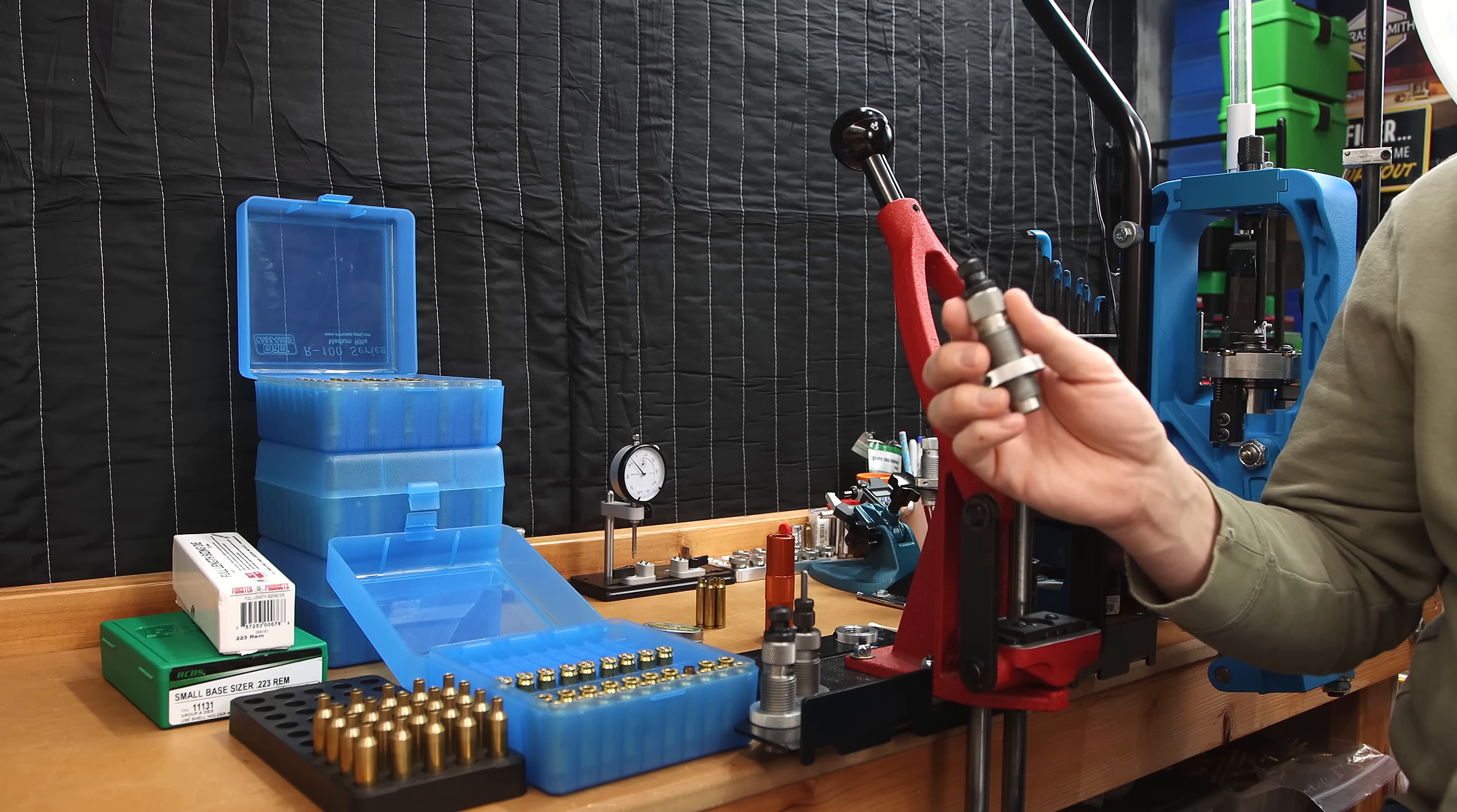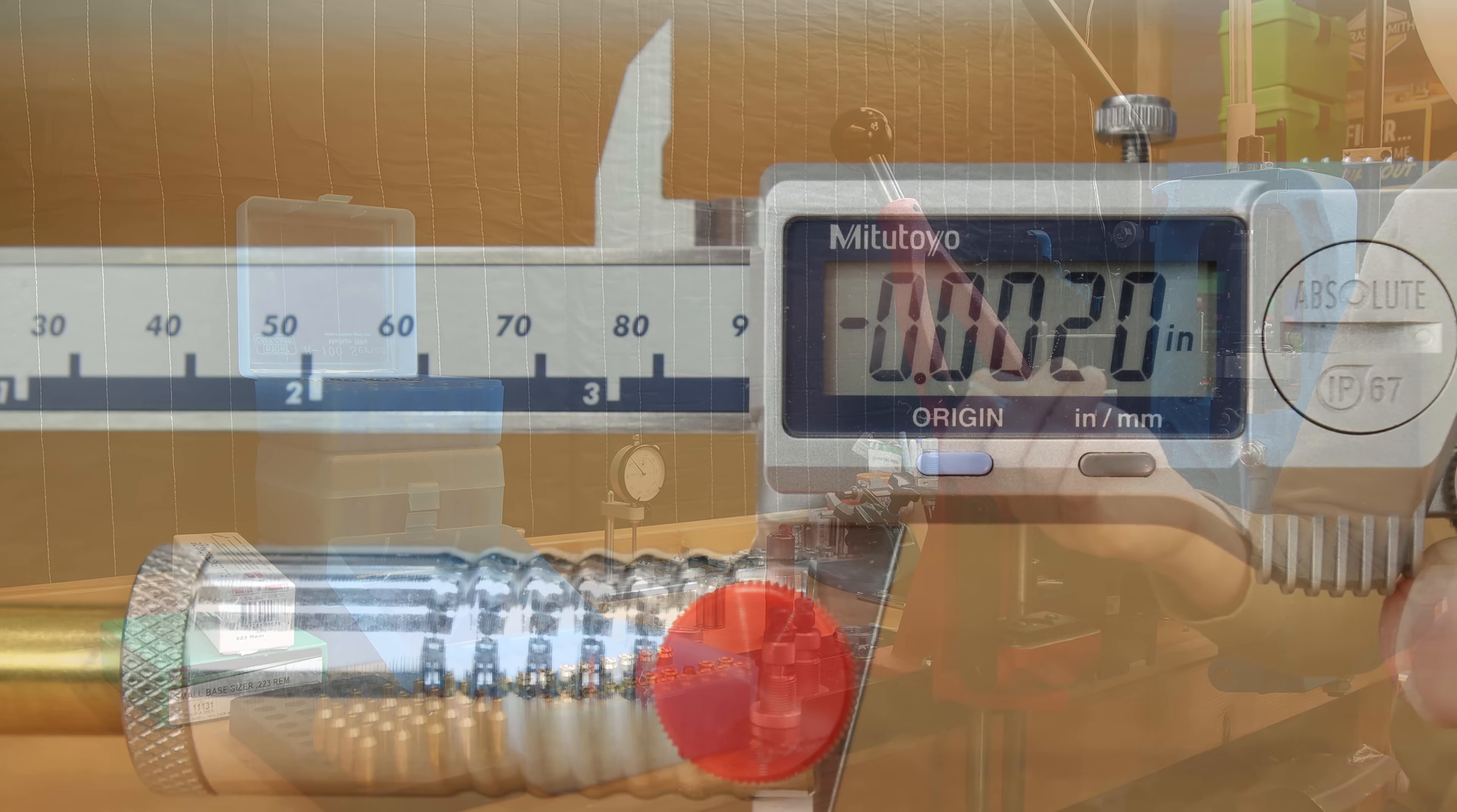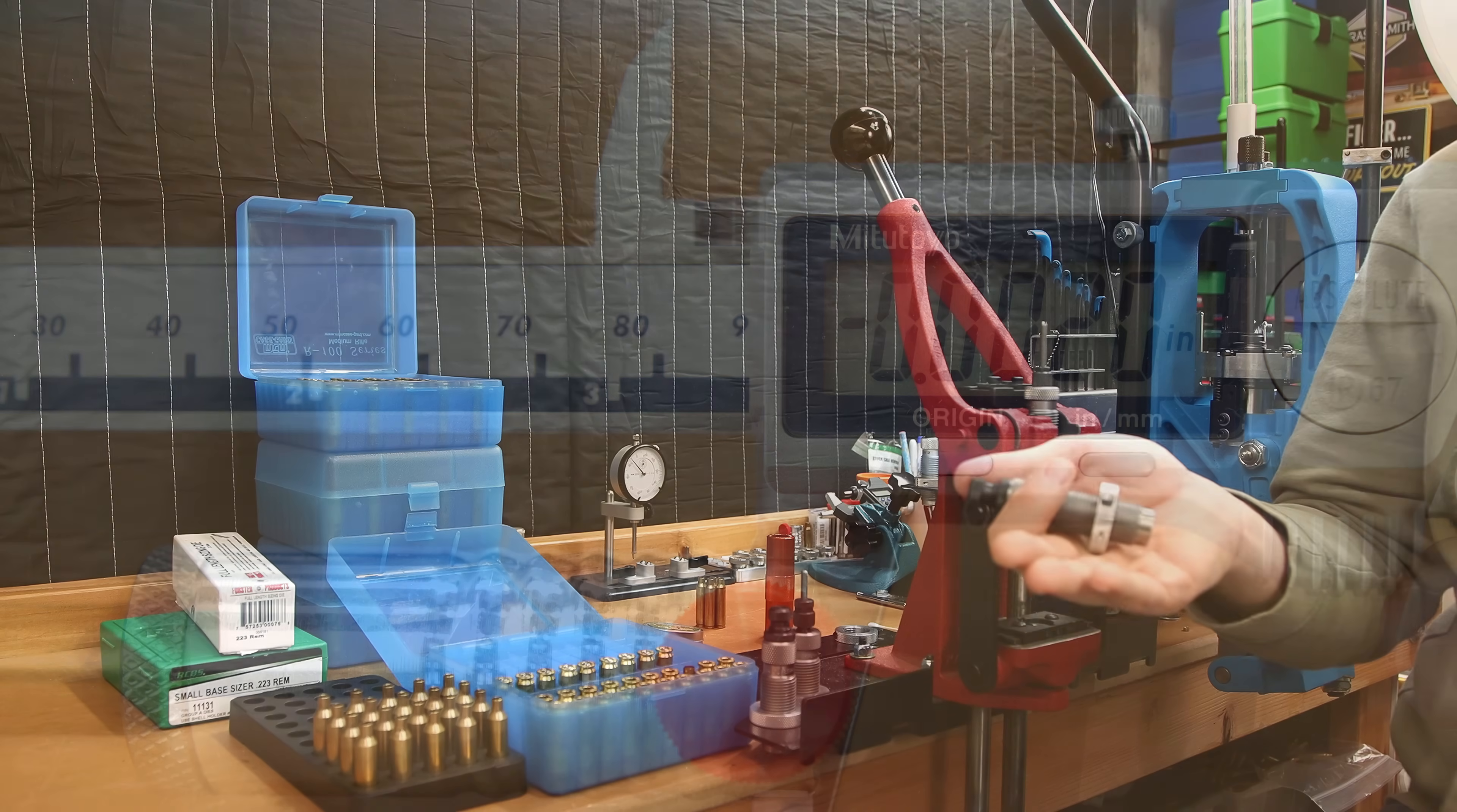Setting up your full-length sizing die can be very simple, and yet there are several ways of doing it. In my opinion, controlling how far you're setting back the shoulder of the case is very important, but it may not be to you.